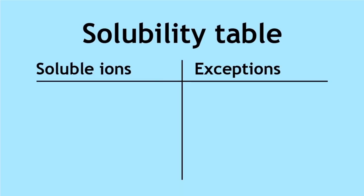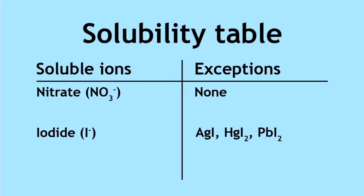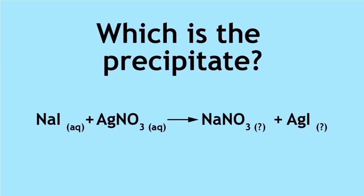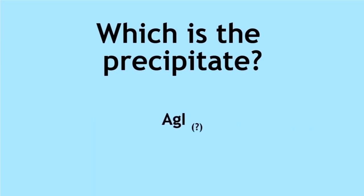All nitrate salts are soluble in water. All iodide salts are soluble in water, except when combined with lead and silver. Therefore, silver iodide is insoluble in water and is that bright yellow precipitate formed in this reaction.